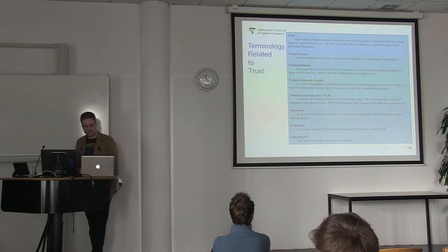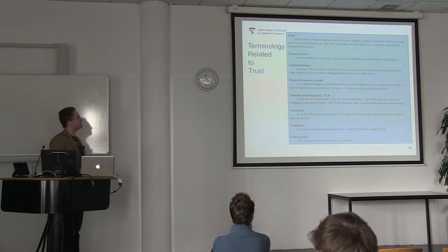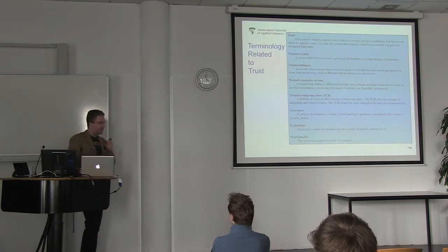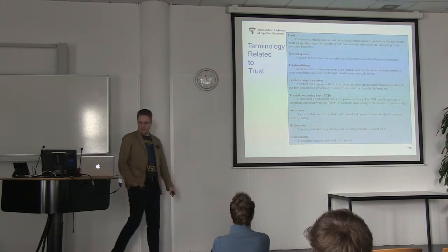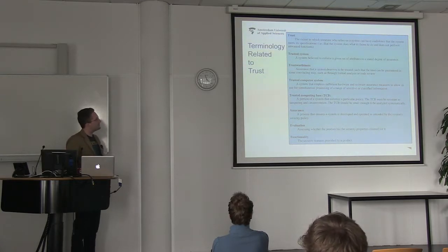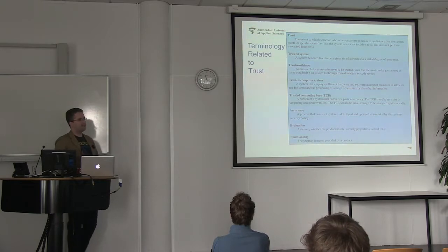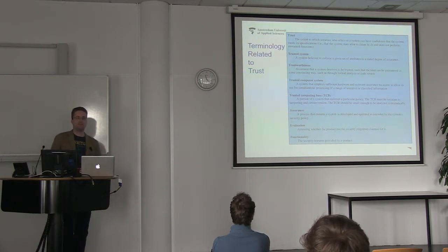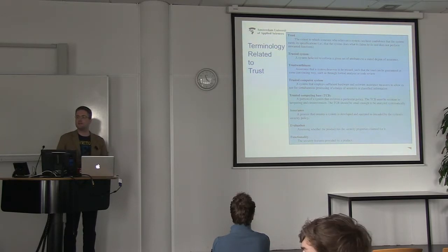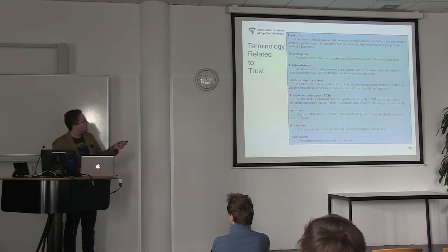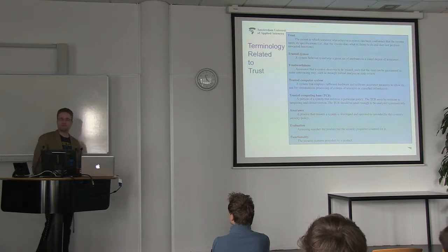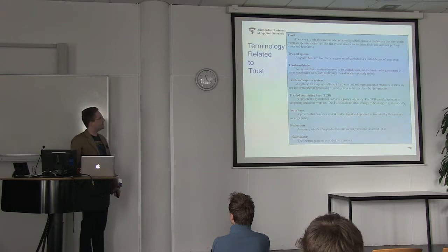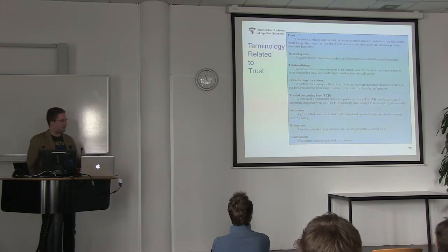If you look at the trusted computer system definition, it says 'simultaneous processing of a range of sensitive or classified information' — which concept comes back here? MLS — multi-level security. Assurance is also very important here; think about quality assurance. And evaluation — as I mentioned previously, we'll get into more details. This usually involves things like audits or pen tests to see if the system performs and works as intended.